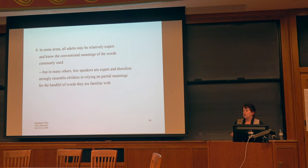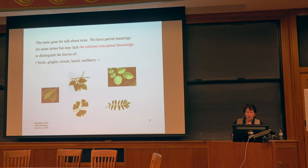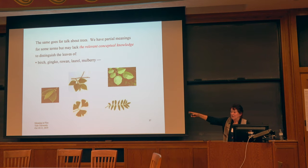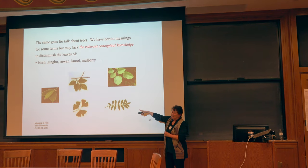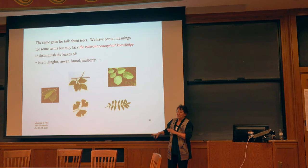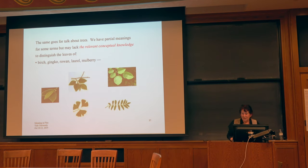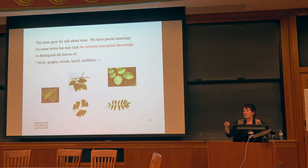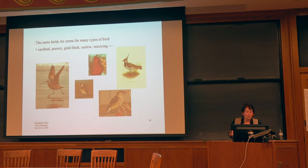In talk about trees, many of us have partial meanings for some terms but lack the relevant conceptual knowledge to distinguish the leaves of birch, ginkgo, round, laurel, and mulberry. Showing those leaves to an audience, few could reliably identify them. Similarly, terms like cardinal, peewit, curlew, waxwing, and goldfinch are names for types of birds that many people would struggle to identify correctly.